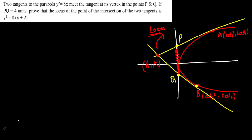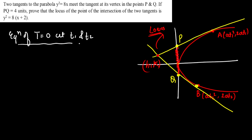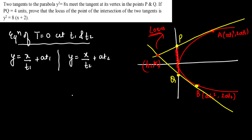I'm going to start with the equation of tangent at t₁ and t₂. The equation of tangent at t₁ will be y = x/t₁ + at₁. Similarly, the tangent at t₂ will be y = x/t₂ + at₂. Now from here, let's calculate point P. At point P, the x-coordinate will automatically be 0, so the y-coordinate will be at₁. Similarly, point Q will be (0, at₂).